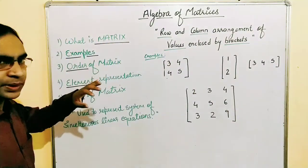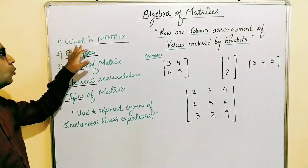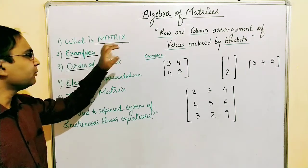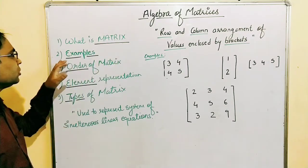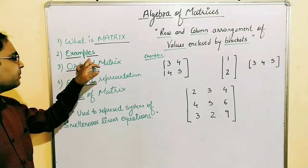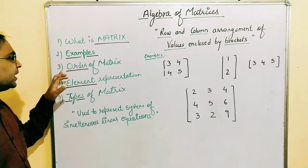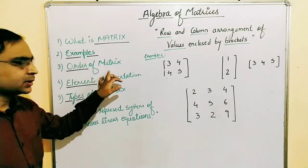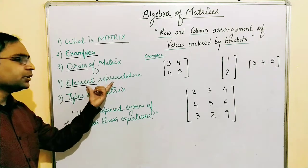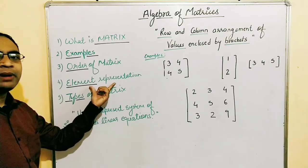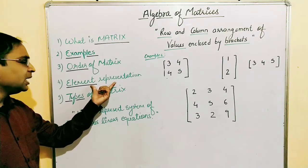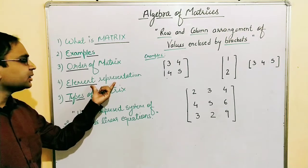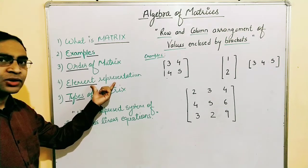Today we will talk about matrices. First we'll see what is a matrix, what we mean by a matrix. Then we'll talk about some examples based on that matrix, and then we'll talk about the order of the matrix. Later we'll see how we can represent a matrix in row and column form and how we can access the elements of the matrix.